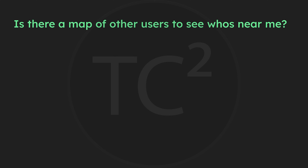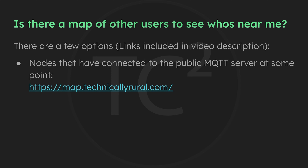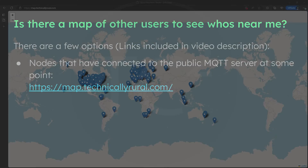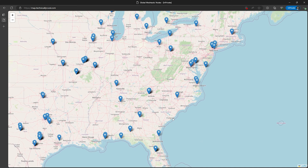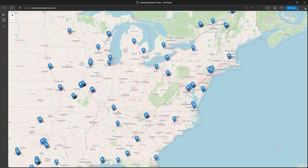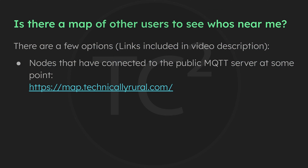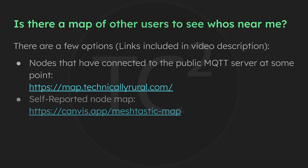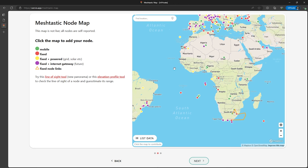The next question is: is there a map of other users or devices to see who's near me? There are currently a few options. The first isn't a live map, but a map of users who have connected to the public MQTT server at some point. We'll get into MQTT in the advanced series, but looking through this map you can select the pins and see the last time the device connected to the public MQTT server. The next option also isn't a live map — this map is self-reported, so if you've put up a device, you can go onto this map and report it yourself to make others aware.